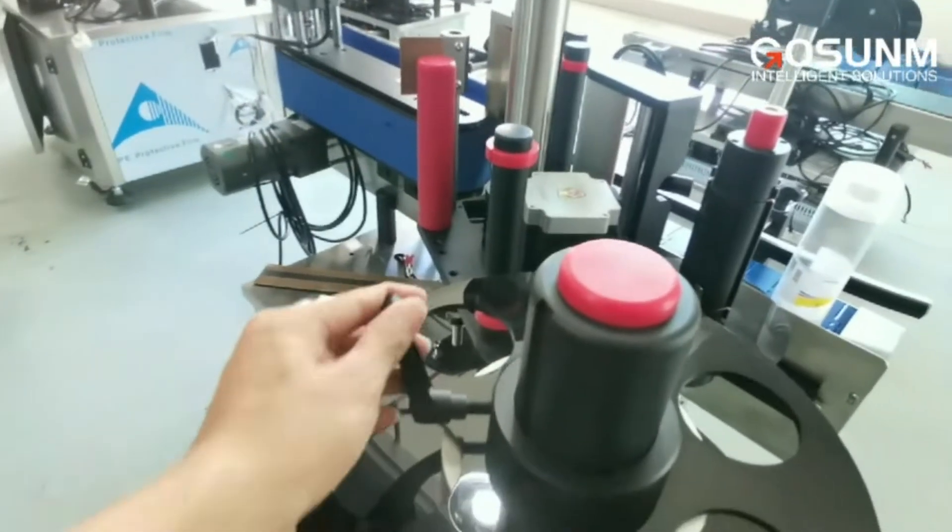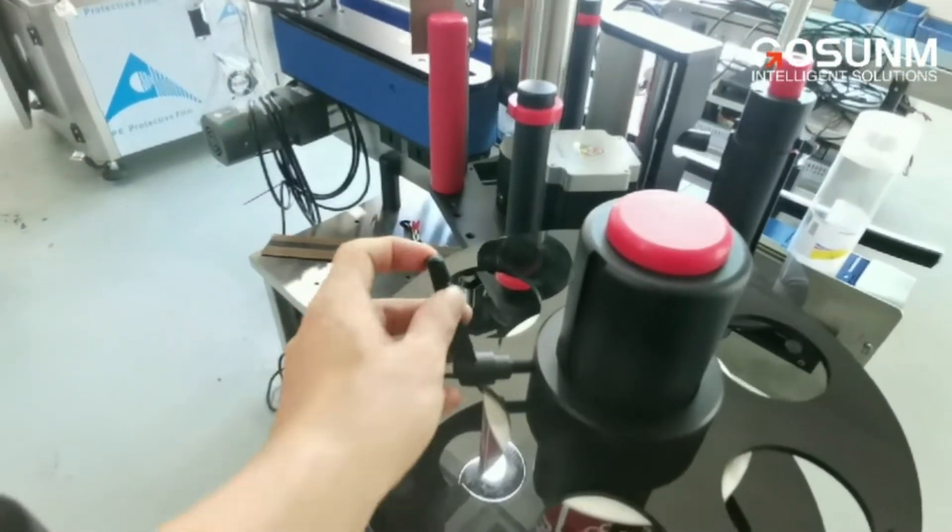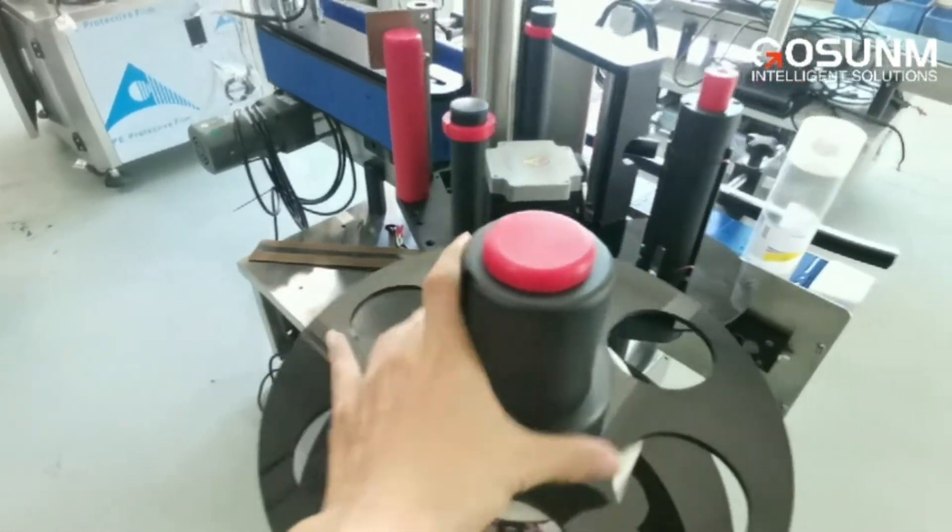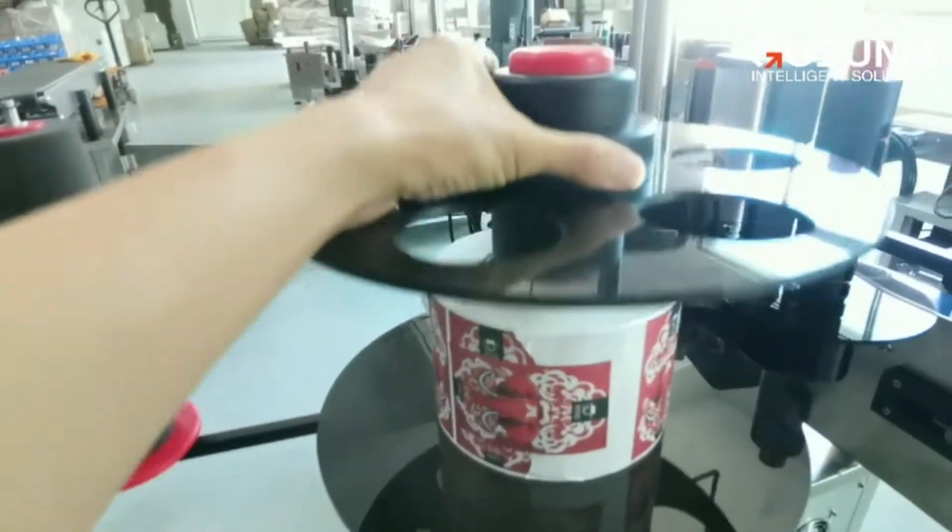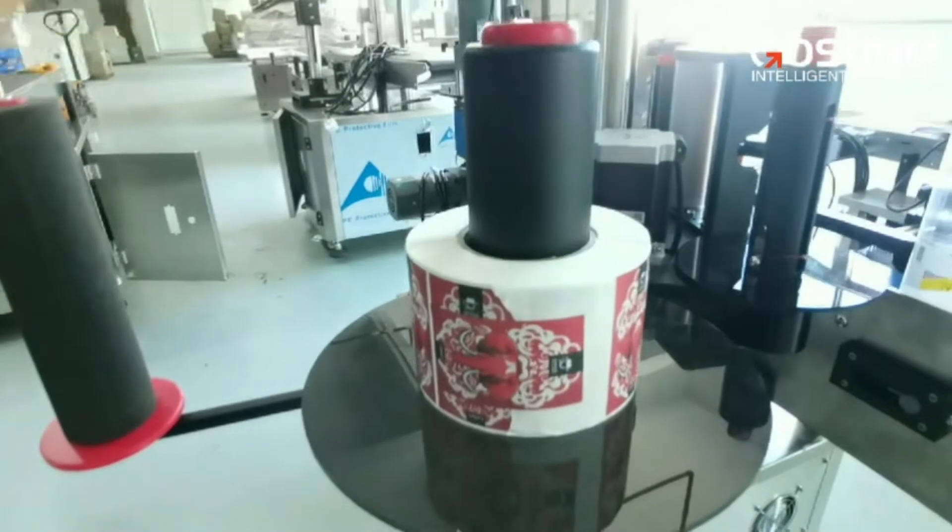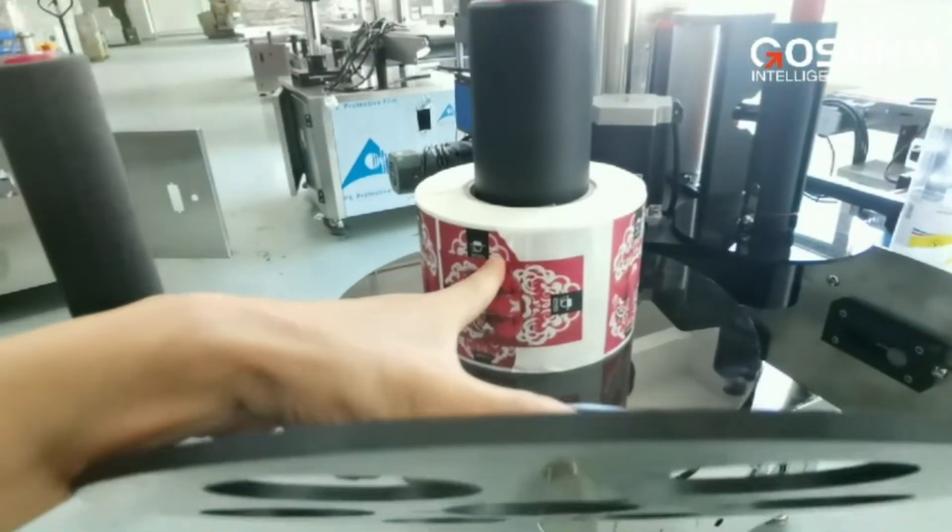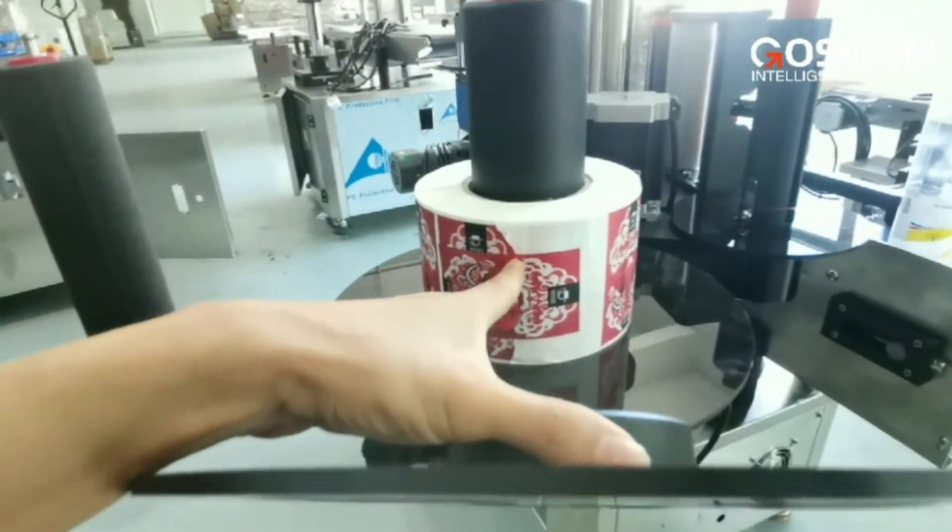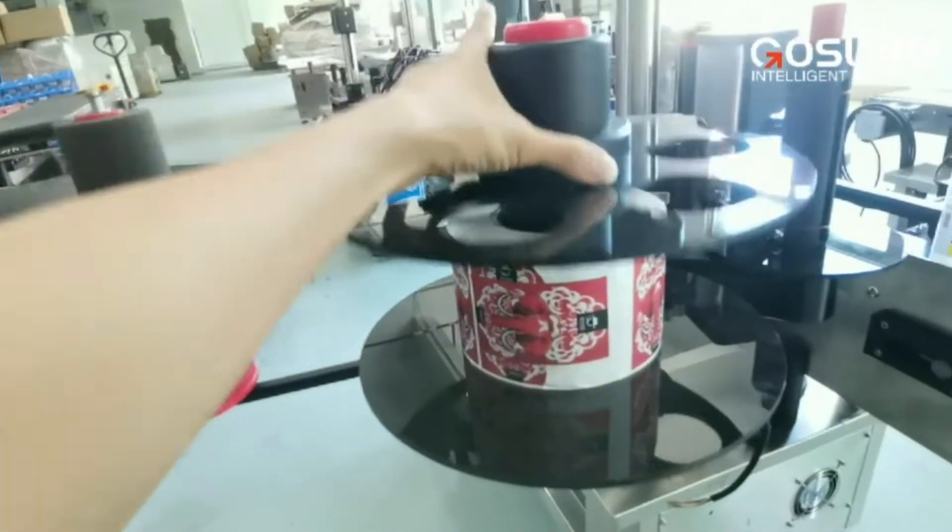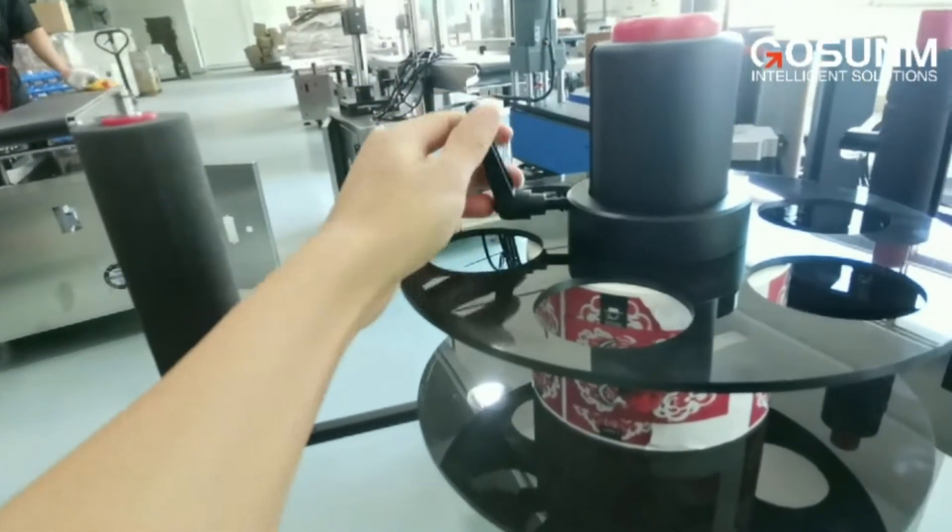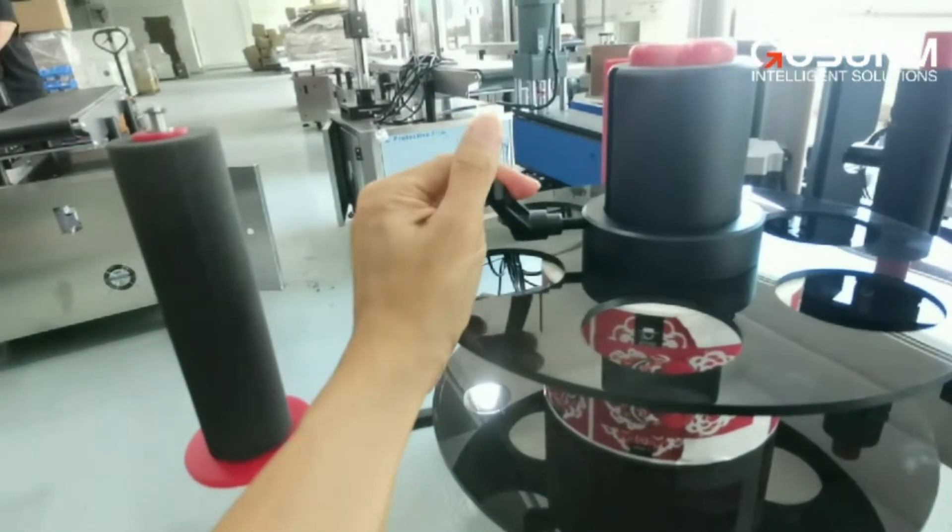We just added this handle. Then you can remove this upper part, and this is a label rail. Put the label roll here, and then we just fix it.